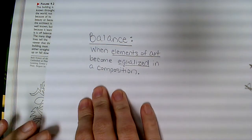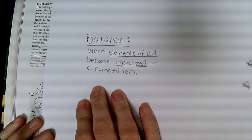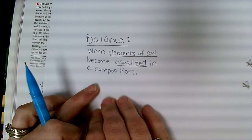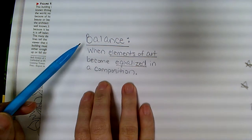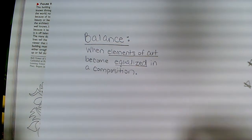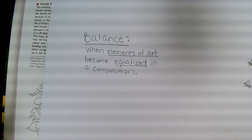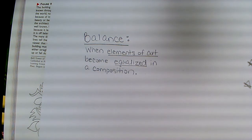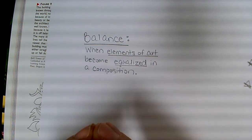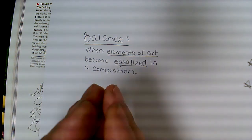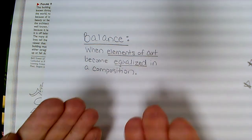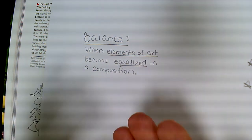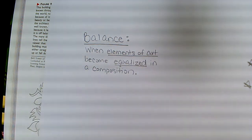Today we're going to take a look at another one of the principles of design — we're going to focus on balance, learning how two different elements of art become equalized in a composition so everything seems balanced and evenly weighted. We're going to look at the visual weight of things.